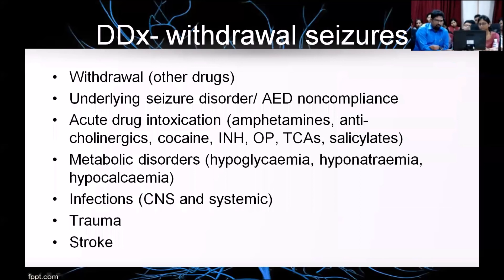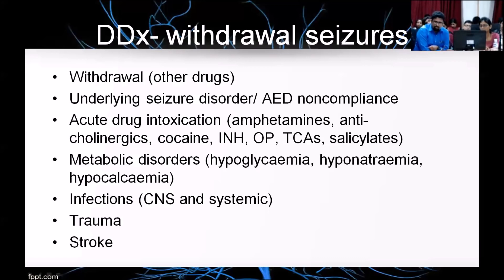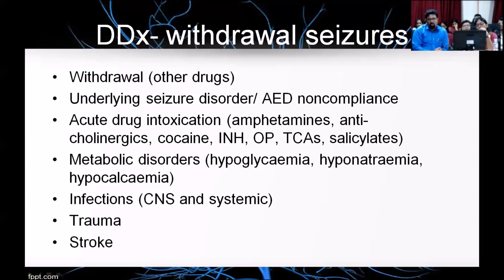We should also think about ruling out other drug use such as benzodiazepines or opioid overdose, an underlying seizure disorder, or whether somebody has stopped taking their antiepileptic medications. Other causes include organophosphorus poisoning, INH on ATT, metabolic disorders such as hypoglycemia, hyponatremia, and hypocalcemia. Infections, trauma, and stroke are among the most important things to rule out when seeing somebody with seizures.